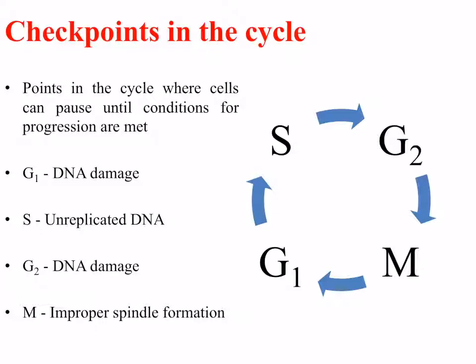There are a number of checkpoints in the cell cycle — points where the cell can pause until the conditions for progression are met. In G1, the cell checks for DNA damage so it is not replicated and carried on. In S-phase, any unreplicated DNA is given time to be replicated. In G2, any DNA damage must be fixed before mitosis. And during mitosis itself, improper spindle formation or separation is checked before the final phases proceed.